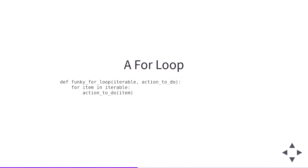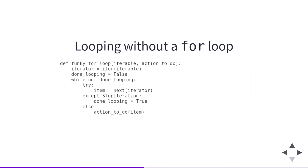Now that we know what iterators are, let's take a for loop and turn it into a while loop. We can manually implement this ourselves. In order to manually loop over an iterable, we need to get an iterator from it, then repeatedly loop and get the next item each time. Once we have that item, we can do whatever the body of our loop was. If we get a StopIteration exception, we know we're done looping. We've just reinvented a for loop by using a while loop and iterators. This is how all looping works under the hood in Python.